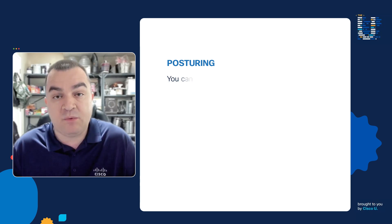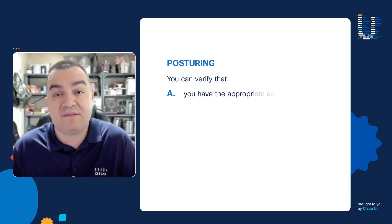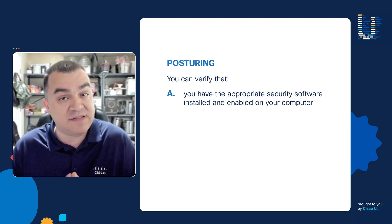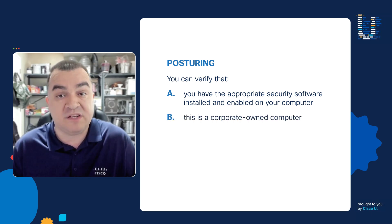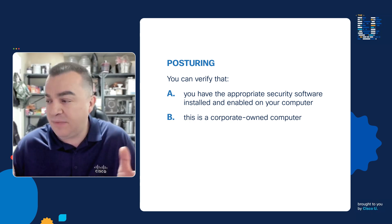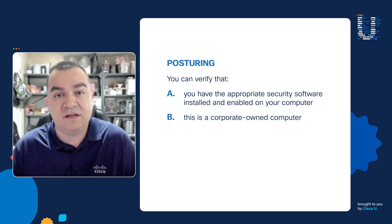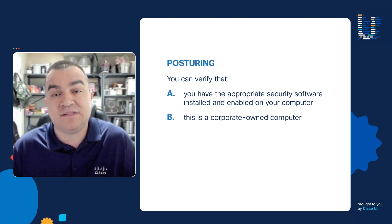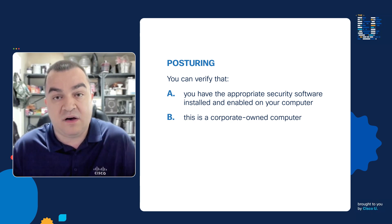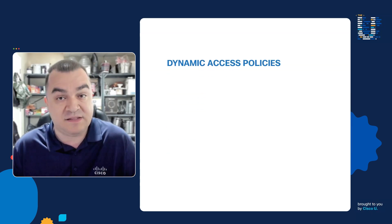With posturing, we can: A, verify that you have the appropriate security software installed in your computer and that it's enabled; and B, is this a corporate-owned computer? Because we don't want anyone using Raspberry Pis or any computer laying around their office in order to connect to the corporate network.